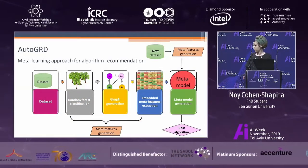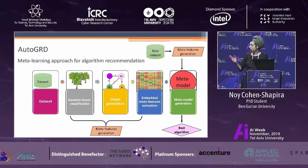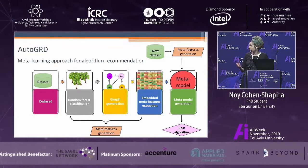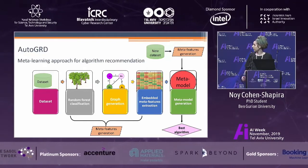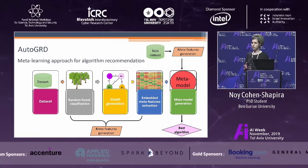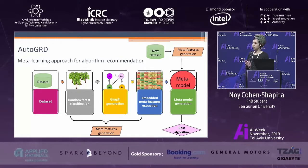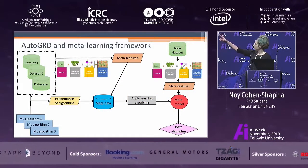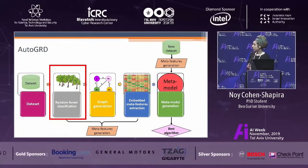How does our method work? Auto-GRD is a meta-learning approach for algorithm recommendation that takes a dataset as input and uses random forest classification to model the interactions among instances. Then we generate a graph based on these interactions. Next, we apply an embedding method to generate the graphical embedded meta-features. By combining these graphical embedded meta-features with a vector denoting the various classifiers, Auto-GRD produces a meta-model capable of recommending top-performing algorithms for a previously unseen dataset. Our work contributes specifically to the meta-features extraction step.